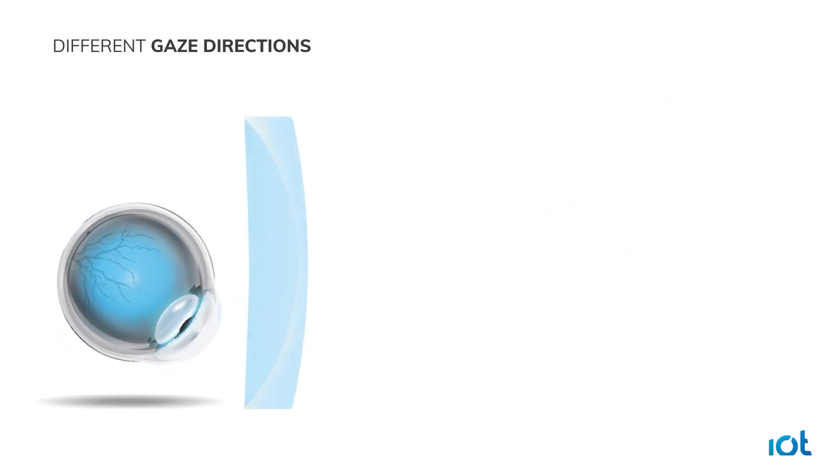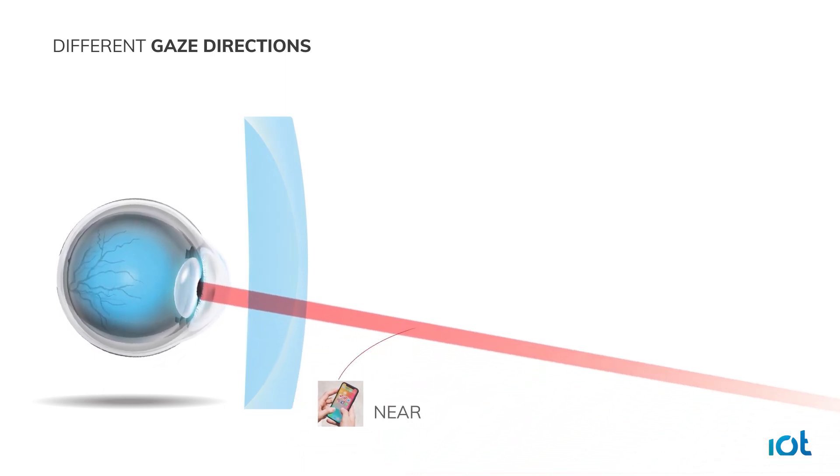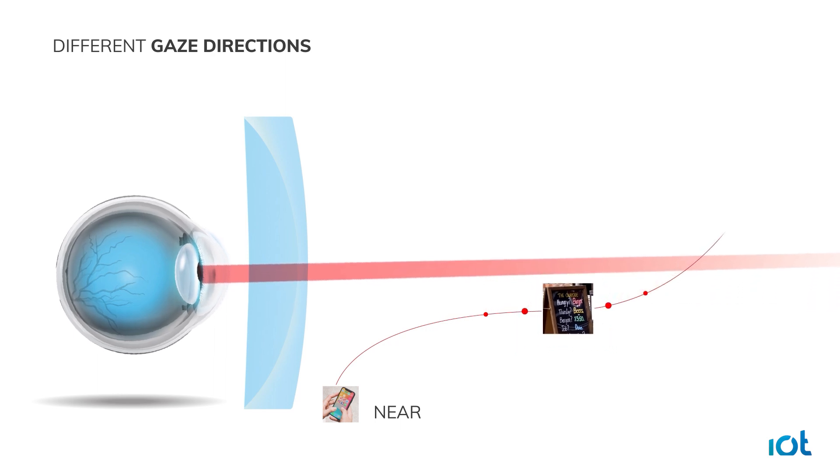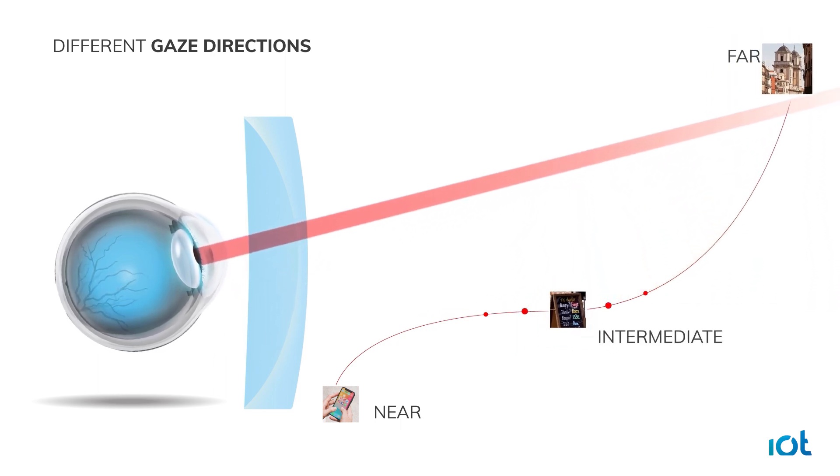Eyes move. People look at different gaze directions and focus on objects at different distances. Nothing is fixed. What happens to the light path in real life?